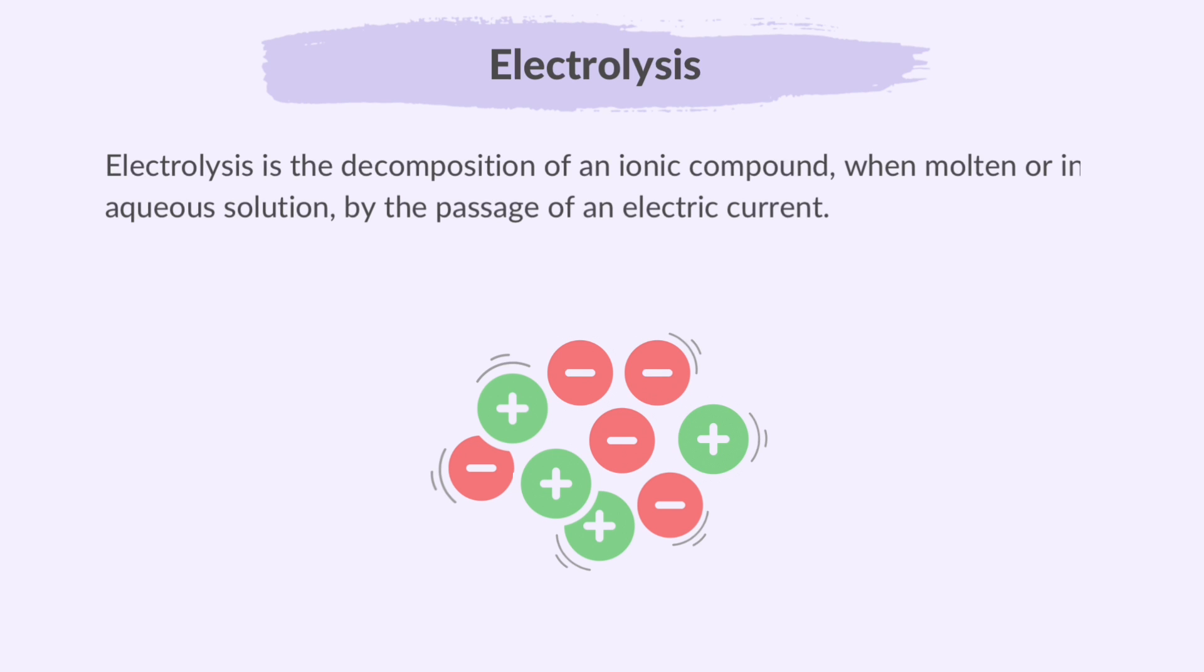Electrolysis is the decomposition of an ionic compound when molten or in aqueous solution by the passage of an electric current. So basically, electrolysis involves breaking apart ionic compounds using electricity. Remember that the ionic compound should be either melted or in water so that they have free ions in order to allow electricity to pass through.